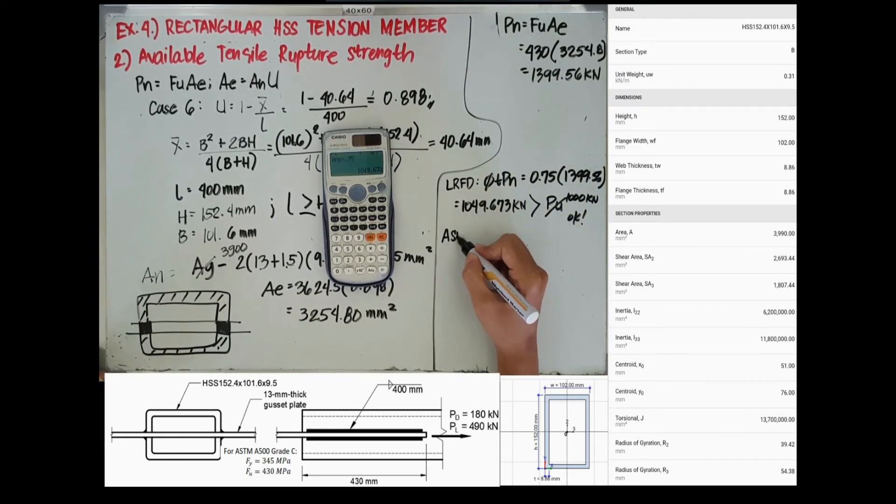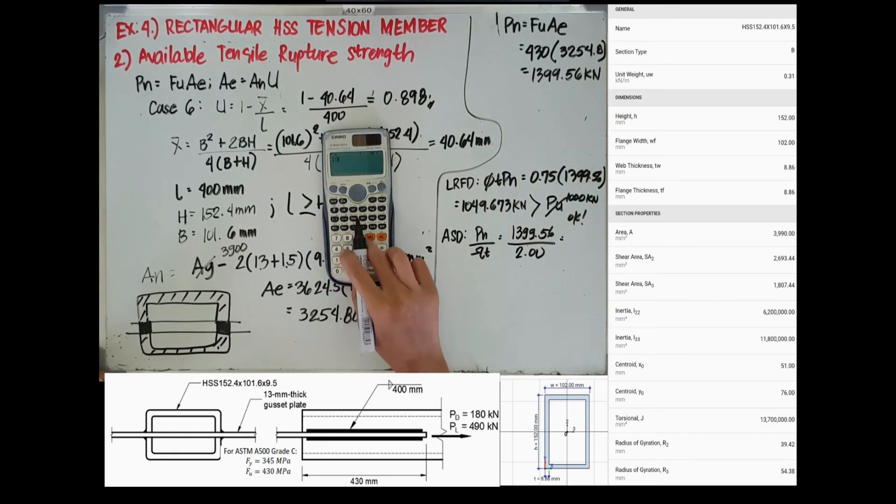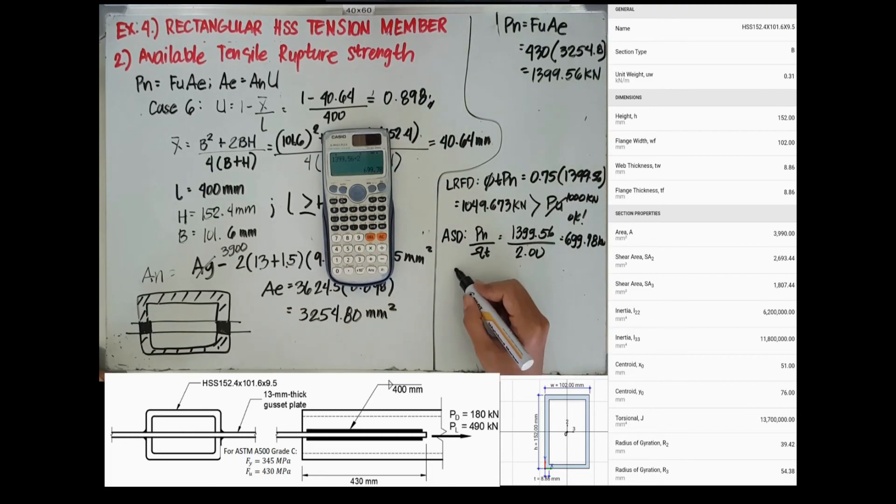For ASD, PN is divided by omega T, and our omega T is 2.0, so it is now equal to 699.78 kN. Comparing it with PA, our PA is 670 kN, so it is greater, so the strength is okay.